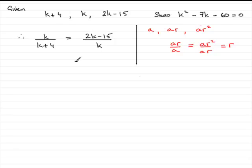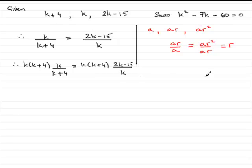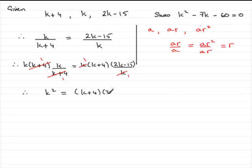All I need to do is multiply both sides by k times (k plus 4). So multiplying the left-hand side and the right-hand side by k(k+4), with (2k minus 15) over k on the right, the (k plus 4) cancels on the left and k cancels on the right. So we get k squared equals (k plus 4) multiplied by (2k minus 15).